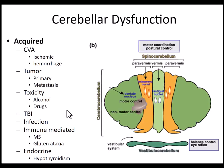You can get cerebellar dysfunction in a number of different ways. The first is acquired: through a stroke, whether ischemic or hemorrhagic; through a tumor that started in the cerebellum (primary tumor) or metastasized from somewhere like the lung; through toxicity due to alcohol or drugs; through TBI and infection; or through immune-mediated processes such as multiple sclerosis and gluten ataxia.